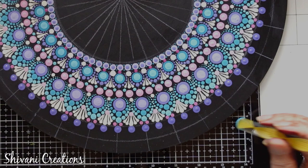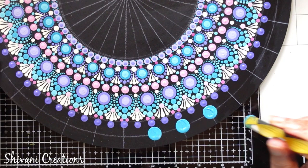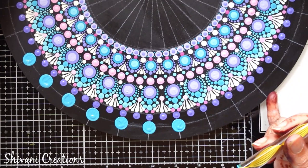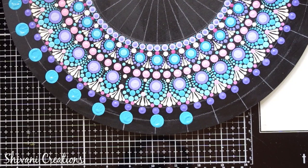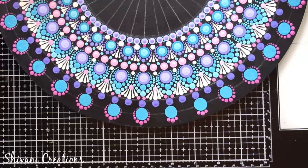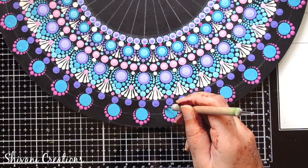Then making one big dot using teal blue color. Then adding one more last row using light pink color dots.